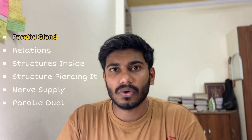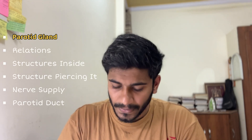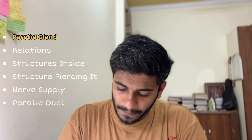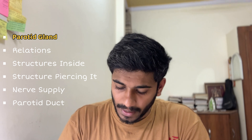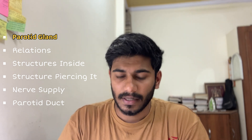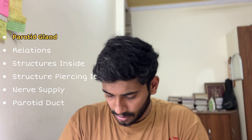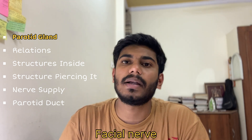Moving on to the glands — one of the most important is the parotid gland. You should know the structures piercing it and the structures inside it. For the parotid duct, you should know what structures it is piercing — it pierces the buccal pad of fat, the buccopharyngeal fascia, and the buccinator. You should also remember the nerve supply and the facial nerve that traverses the parotid gland.